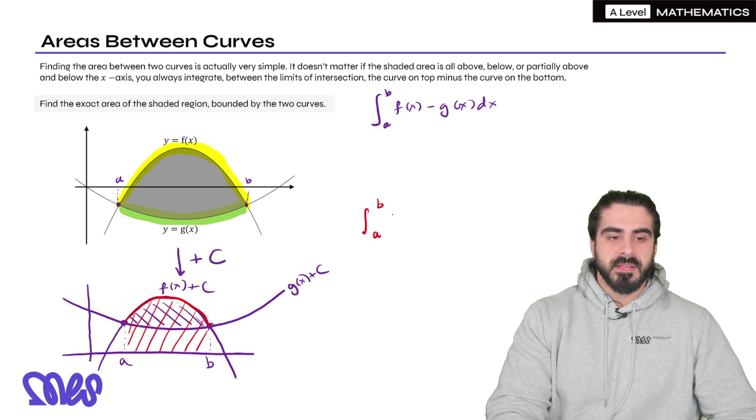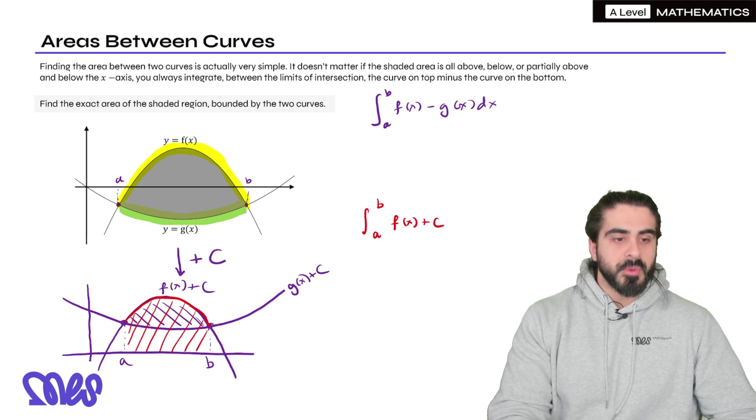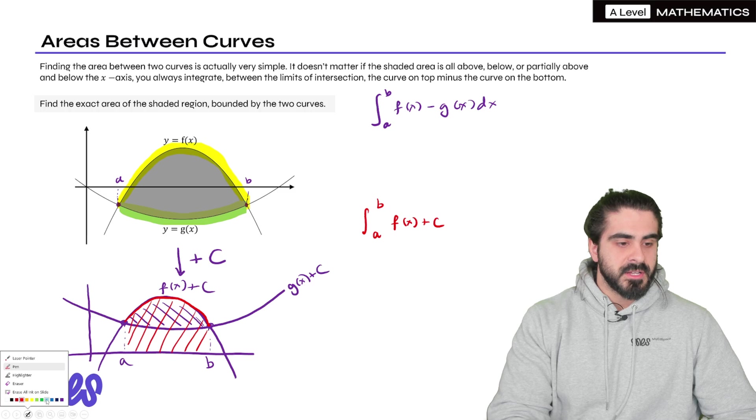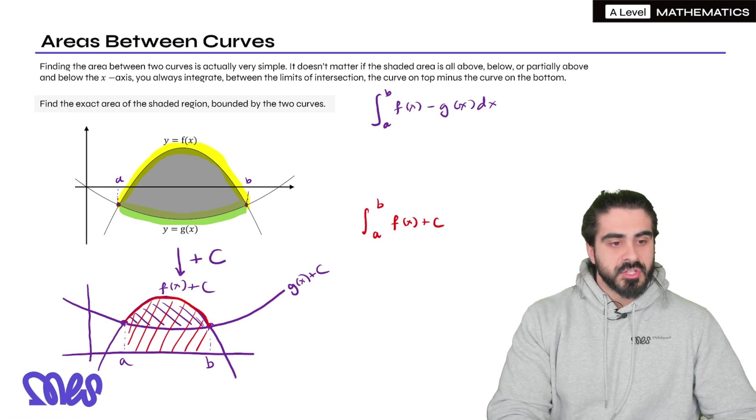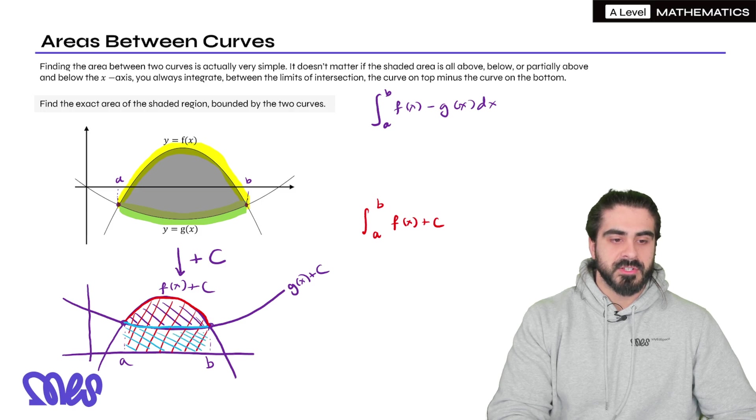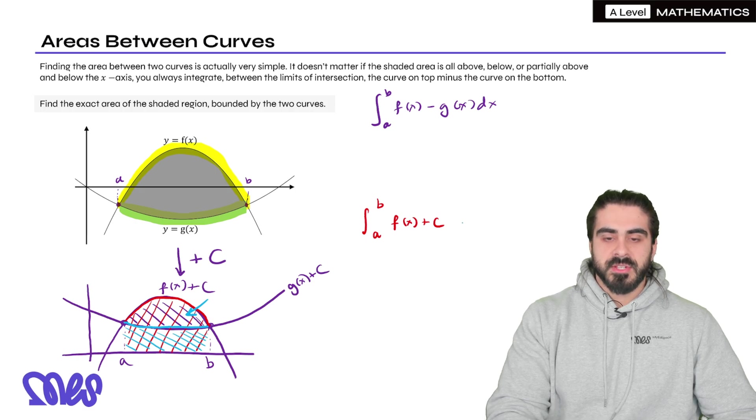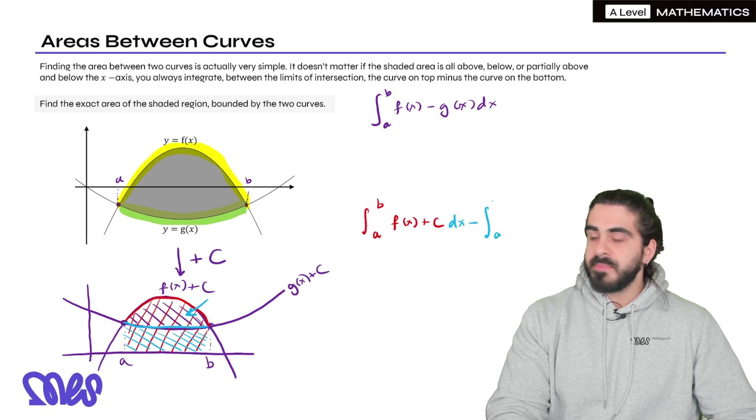You'd have the integral between a and b of f(x) + c. But we obviously don't want that whole thing. There's an area that we need to get rid of, this bit here underneath. So for that we would integrate g(x) + c between a and b and we would subtract it. So we would take this area away and then we'd be just left with that one. So from this we will subtract between a and b g(x) + c dx.